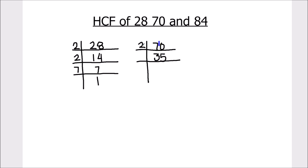35 is not divisible by 2, and it is also not divisible by the next prime number 3. So let's divide it by the next prime number which is 5. 5 times 7 is 35, and 7 is a prime number, only divisible by 7.